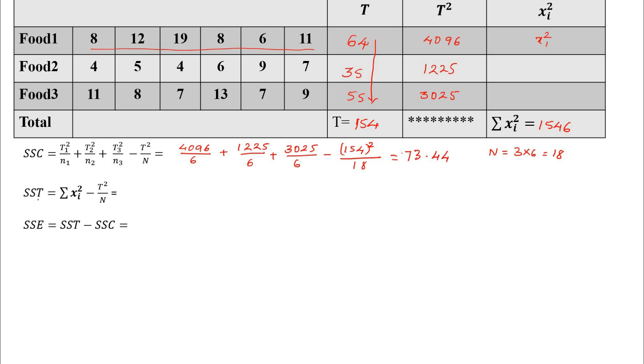Similarly I will find out the sums of squares of treatment, whatever the varieties we have considered treatment. That is given by summation of xi square, that is 1546, minus T square, 154 whole square divided by 18. Calculating this I am going to get 228.44. Finally I will find out sums of squares of error. Sums of squares of error is nothing but just a difference of SST and SSC. I am going to get the value 155, just subtracting these two values I am going to get 155.